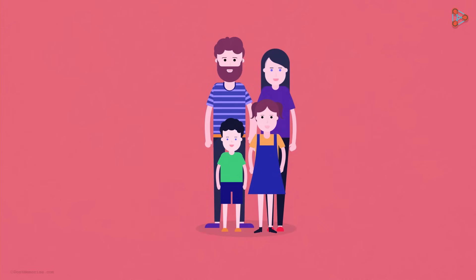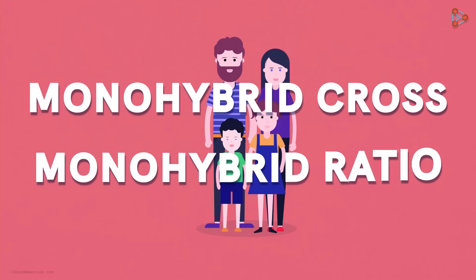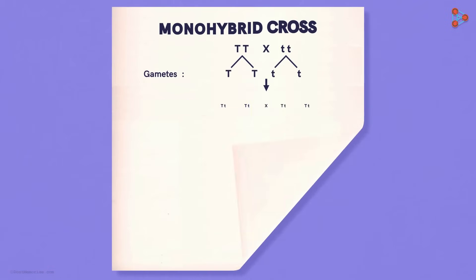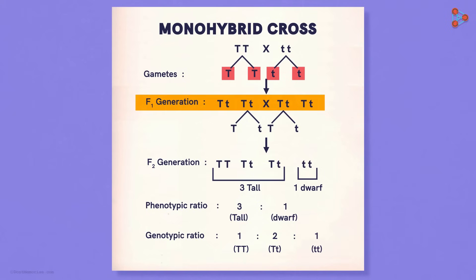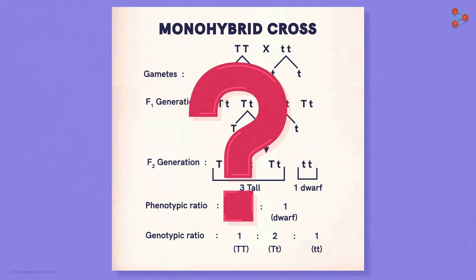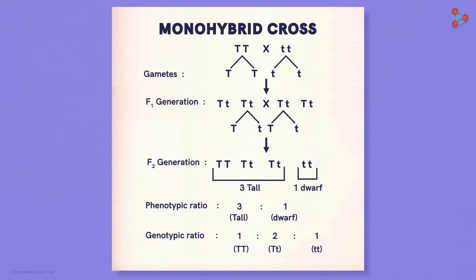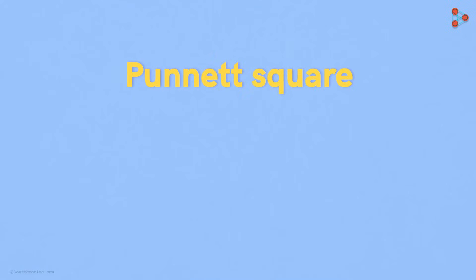We now have understood the monohybrid cross and the monohybrid ratio as well. How did we get the F1 generation? We got it by considering all the possible combinations. But is there a method to find it systematically? There is! So before moving ahead with the dihybrid cross and ratio, let's have a look at the method of writing a cross. The method is named as Punnett Square.